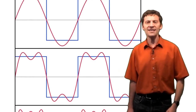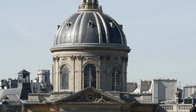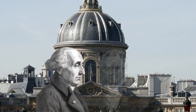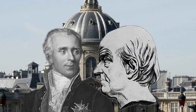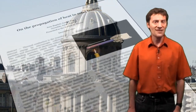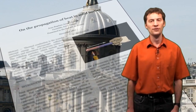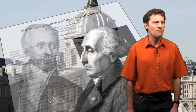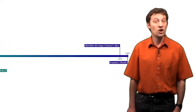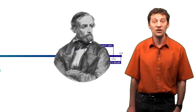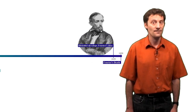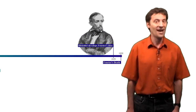He presented his memoir to the Paris Institute in 1807, also to a committee comprising Lagrange, Monge, La Croix, and Laplace. Although this memoir is highly regarded now, at the time of its proposal it was controversial. Lagrange and Laplace both challenged the idea, and it wasn't until 1829 that the German mathematician Peter Gustav Dirichlet managed to demonstrate Fourier's ideas and lay down the conditions under which the theory held.